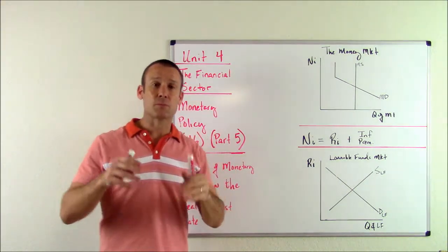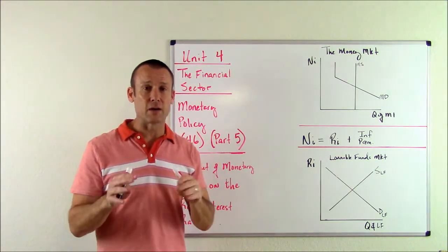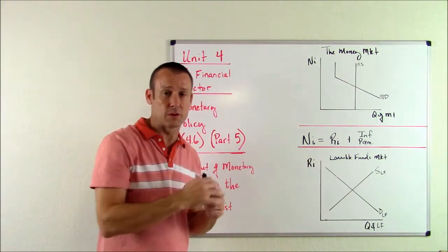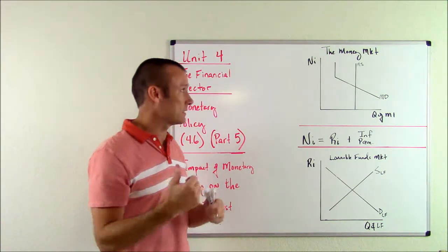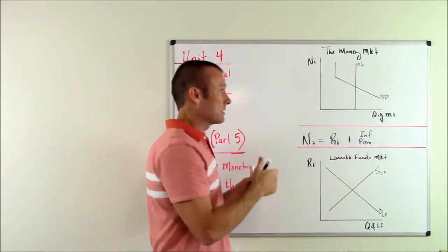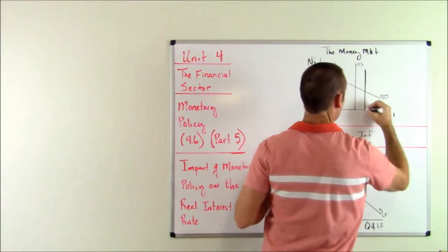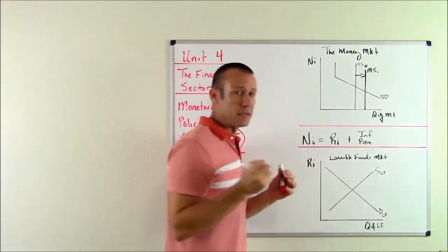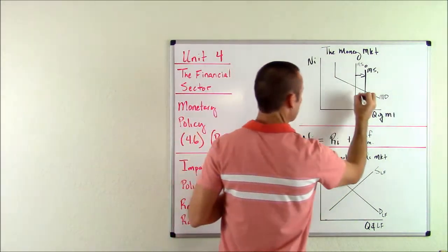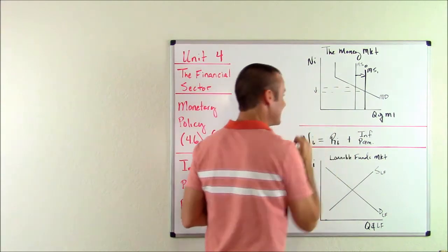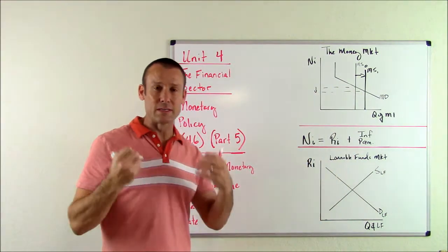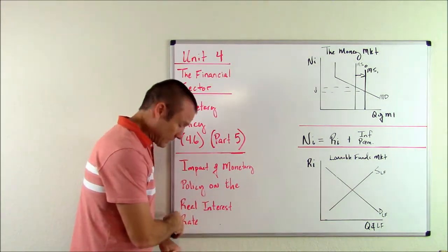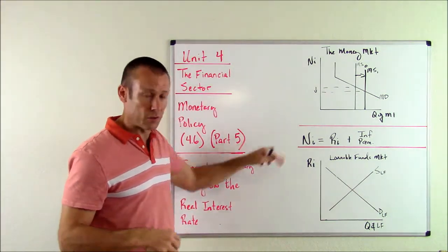Let's assume that we've got a recession going on. The Fed is pushing reserves into the banking system — trying to get more reserves in, trying to get more lending. That increase in lending they're trying to get is to increase the money supply, so the money supply shifts to the right. We're going to increase the money supply and we see the nominal interest rate going down. That is definitely our answer: when we do easy monetary policy, the nominal interest rate goes down.